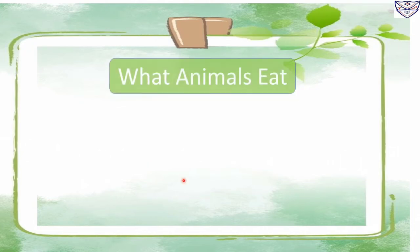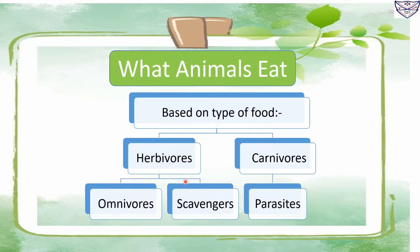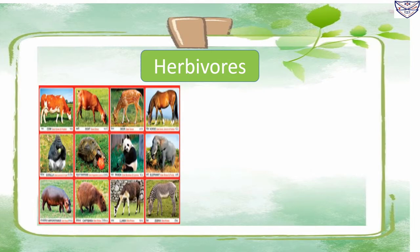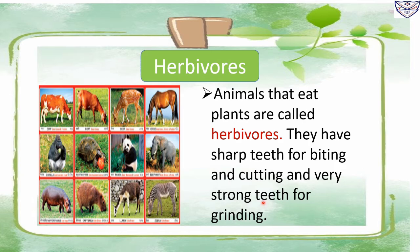Based on the type of food they eat, animals can be divided into five main groups: herbivores, carnivores, omnivores, scavengers, and parasites. Herbivores: animals that eat plants are called herbivores. They have sharp teeth for biting and cutting and very strong teeth for grinding, because plant food needs to be chewed a lot as it is very rich in a substance called cellulose.